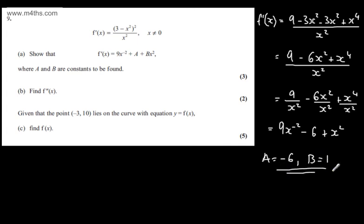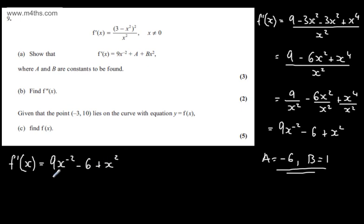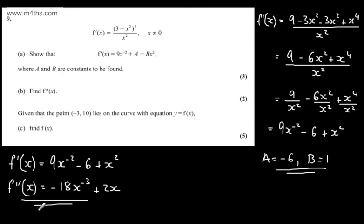That's three marks in total for part a. In part b, we need to find f double-dashed of x for two marks. f''(x) is the second derivative. Taking f'(x) equal to 9x to the minus 2, minus 6, plus x squared, and differentiating again: multiplying down by the power and dropping the power by 1 gives minus 18x to the minus 3. Differentiating the constant gives 0, and differentiating x squared gives plus 2x. So two marks in total for finding the second derivative f''(x).